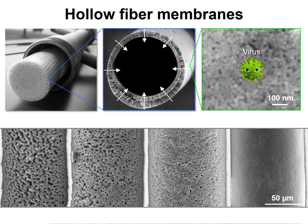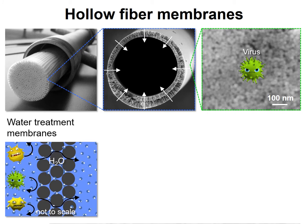For instance, a typical virus particle size is on the order of 100 nanometers, too big for the pores. Therefore, the membranes operate on the principle of size exclusion. Objects smaller than the pores, such as water molecules, can go through, while objects bigger, such as viruses, cannot.